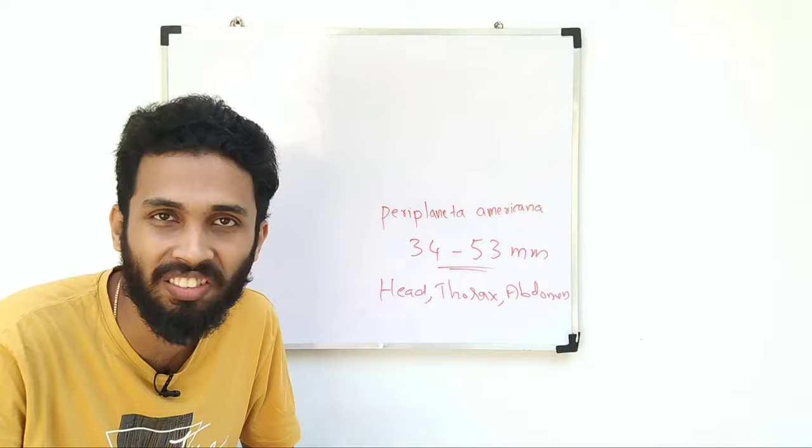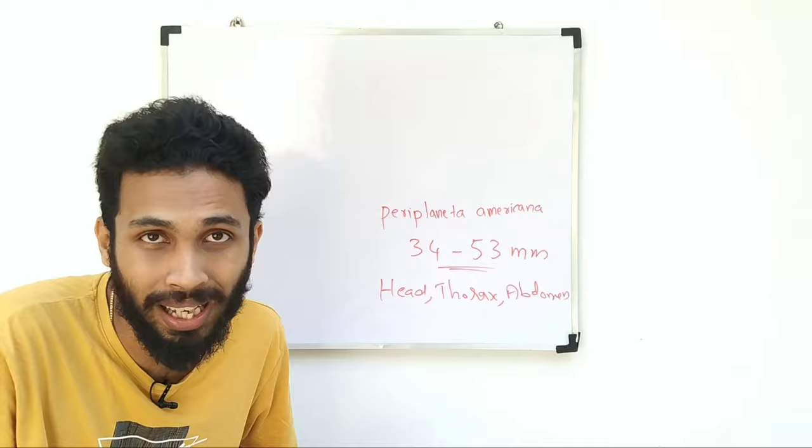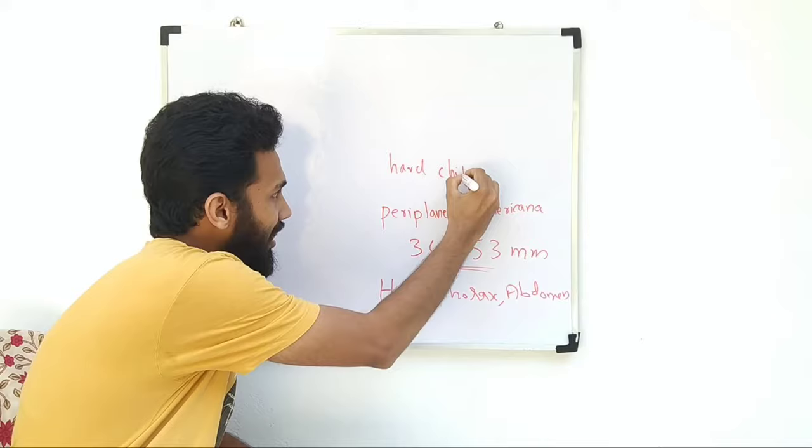Exo means external, and the skeleton is exoskeleton. It is made of chitin, found in all insects. They have a hard chitinous exoskeleton.